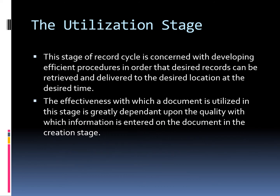The utilization stage of the record cycle is concerned with developing efficient procedures so that desired records can be retrieved and delivered to the desired location at the desired time. The effectiveness with which a document is utilized in this stage is greatly dependent upon the quality with which information is entered on the document in the creation stage.